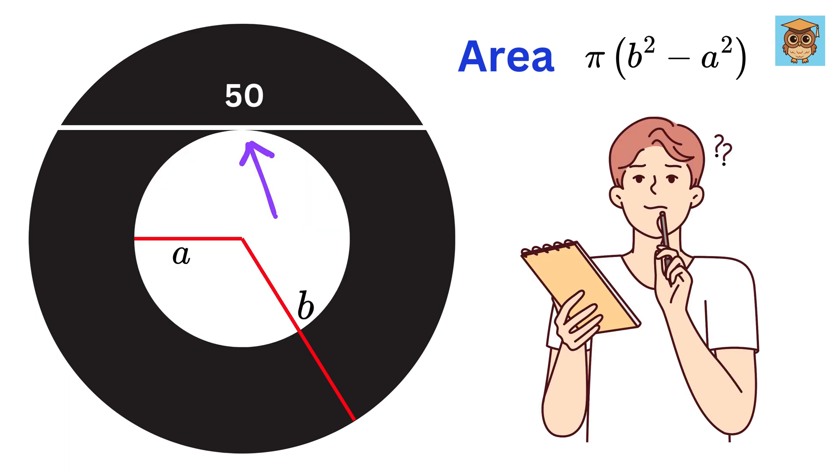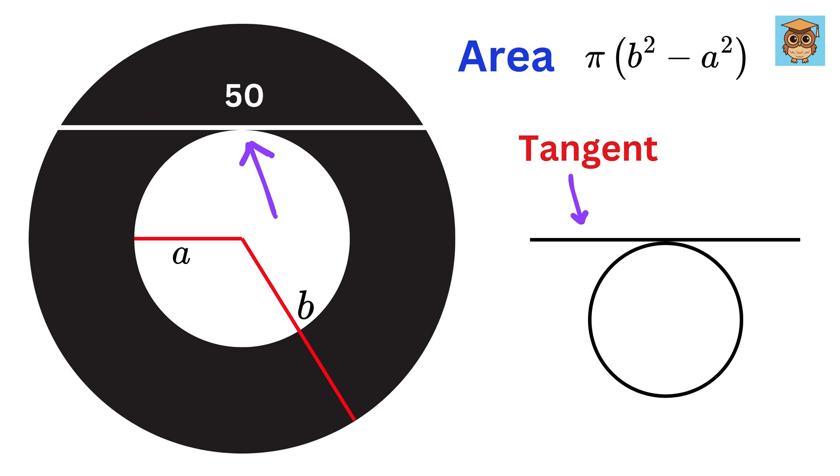You might wonder, what is a tangent? A tangent is a line that just touches the edge of a circle at exactly one point. It doesn't cut through the circle, it just grazes it.